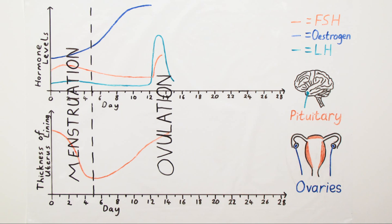LH levels then fall quite rapidly and remain low for the rest of the menstrual cycle. Oestrogen levels fall now that the uterus lining is thick enough to potentially be able to support a developing embryo. And towards the end of the menstrual cycle, in the last few days, if a fertilised egg cell hasn't arrived and embedded itself in the uterus, the uterus lining starts to break down.